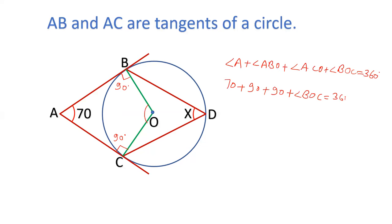So from this point, we can calculate the value of BOC. That is, BOC is 360 minus 180 minus 70. 180 minus 70 is 110. So this angle is 110.